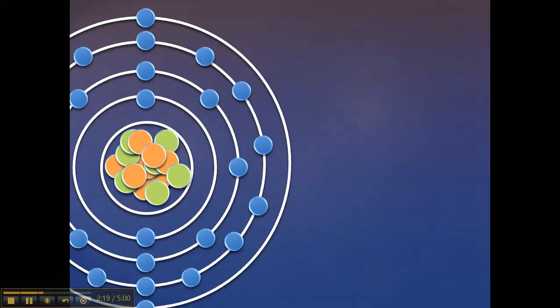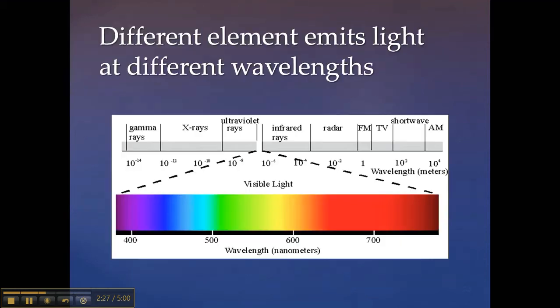If we add this specific amount of energy to the atom, then the electron will jump up to a higher energy state. This specific amount of energy can be translated into light, and since the amount of energy in a light is related to its wavelength, we can choose the amount of energy we add to the atom.